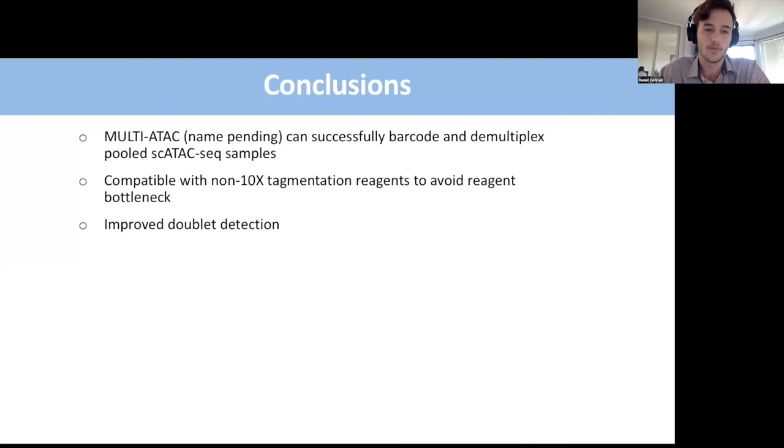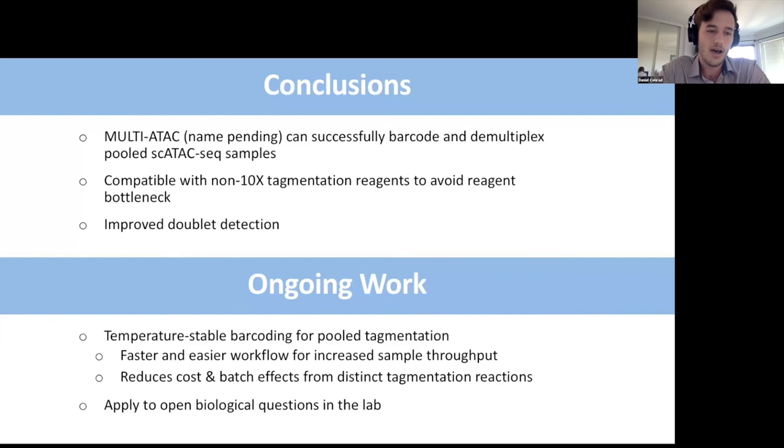Ongoing work that we're focused on right now is a fantastic postdoc in our lab has developed a method that we think will enable us to perform temperature-stable barcoding that will allow us to do pooled tagmentation. This will result in a faster and easier workflow for increased sample throughput and will significantly reduce cost and batch effects from having to perform distinct tagmentation reactions. Once this is finished, I then want to take this method that we've now worked on and apply it to open biological questions in the lab, such as, as Hanneke mentioned earlier, how oncogenes stimulate cell state changes at the earliest stages of breast cancer in the mammary gland and affect tissue structure, and why hormone-receptor positive mammary epithelial cells become less responsive to hormone-receptor signaling after pregnancy. This is all work done by some of my fantastic lab mates that I then want to apply this to.